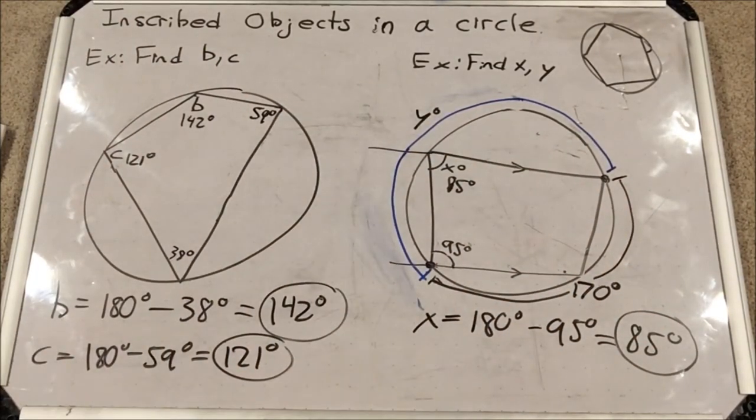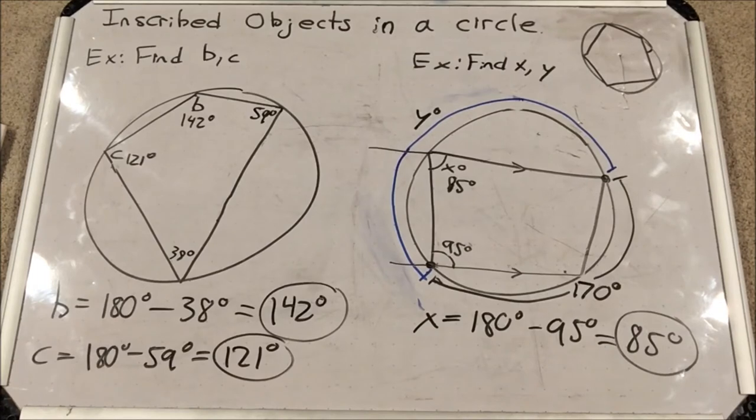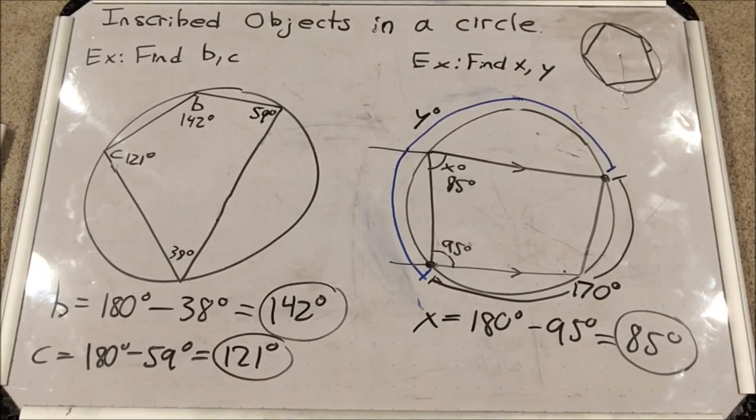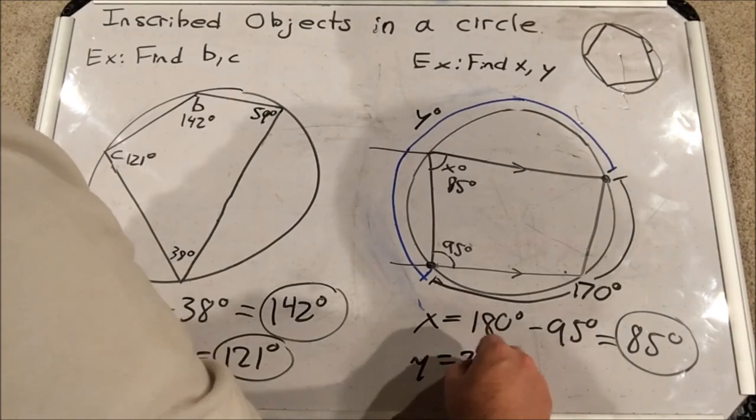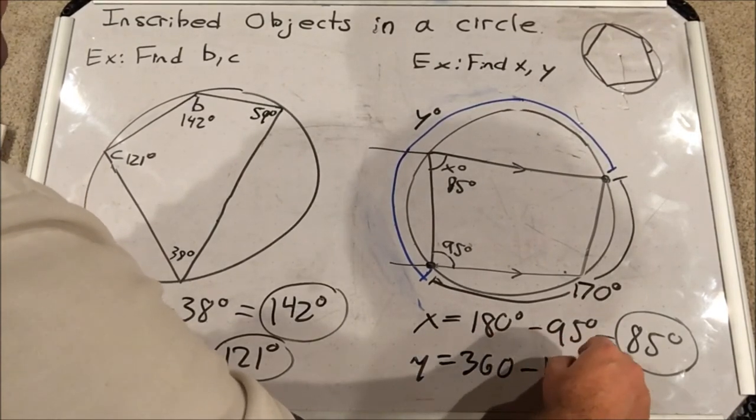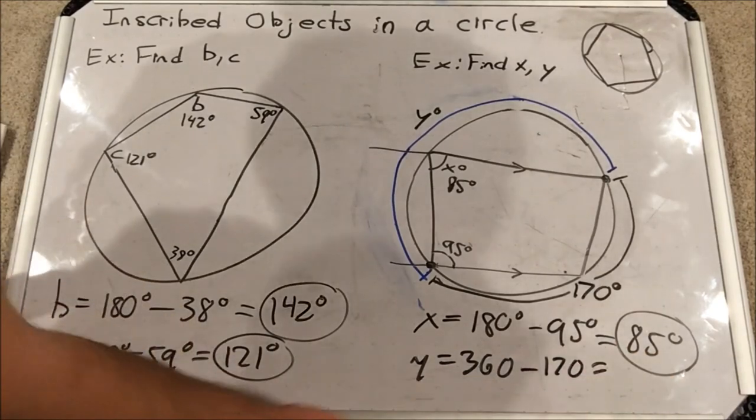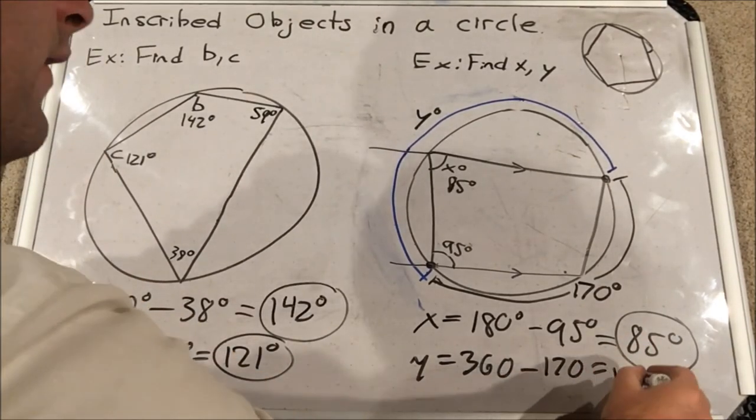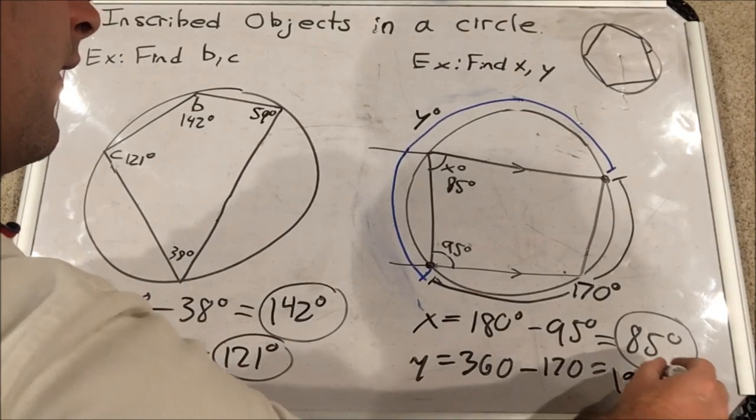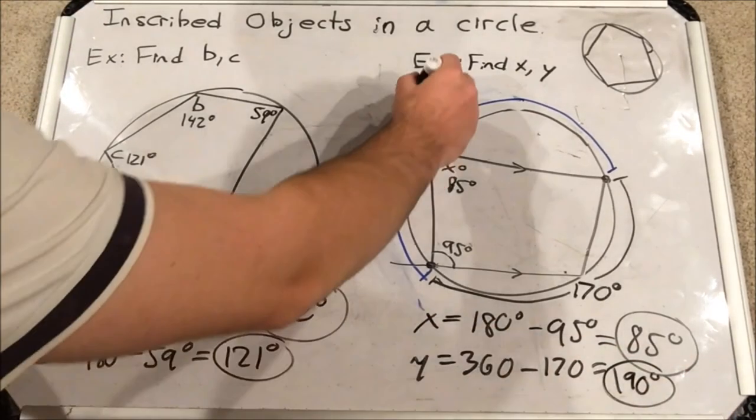Okay, the remainder of the circle is y, that arc. So to find y, we would just do 360 minus 170, and that, my friends, is 190. So y is 190 degrees.